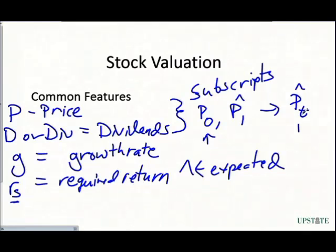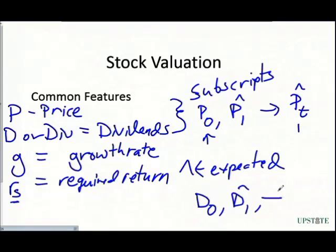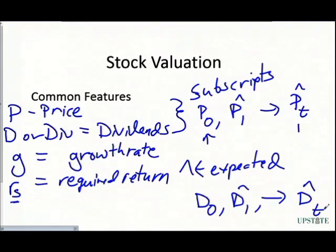We also use the same notation on our dividends: D sub zero, D-hat sub one, all the way out to D-hat sub T. We use these subscripts to note when we're actually receiving them, to make it easier to plug our numbers in and make sure we get the right exponents on our time value of money formulas.